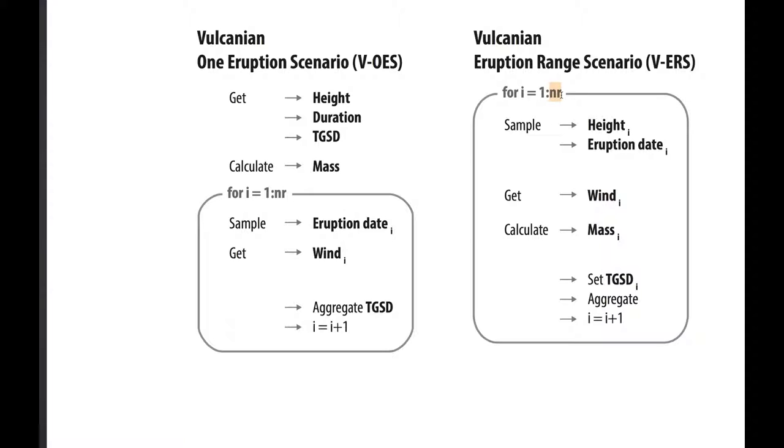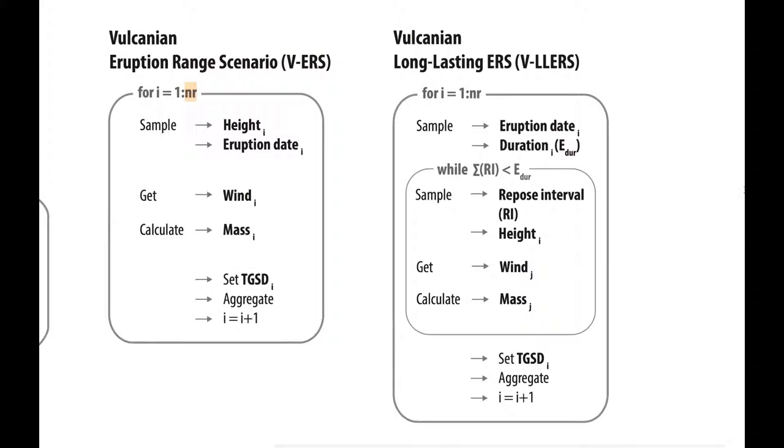Although the hazard of single Vulcanian explosions was already considered, one thing that was largely ignored is the hazards due to long-lasting Vulcanian eruptions, and that's what we try to solve with this long-lasting eruption range scenario. In this case we are simulating for example a thousand Vulcanian cycles. These are really long, heavy simulations. I don't think you're going to be able to run this kind of simulations on a single CPU, you're going to have to go onto clusters. A run is a Vulcanian cycle. We start, we get a first eruption date for the eruption and a duration. Let's say that a duration can last between three weeks and three years, for example.